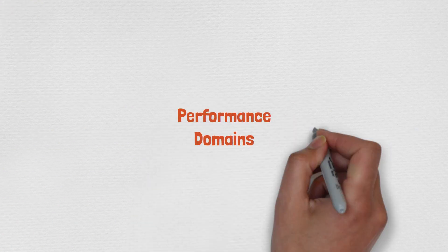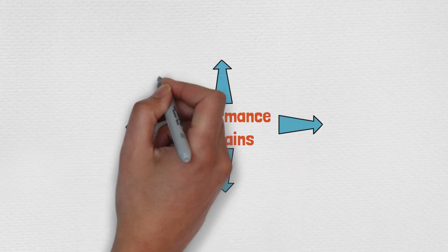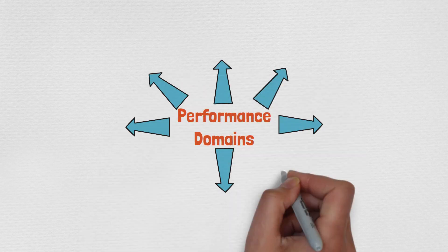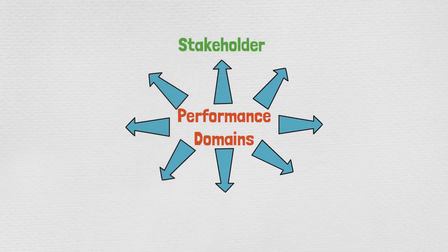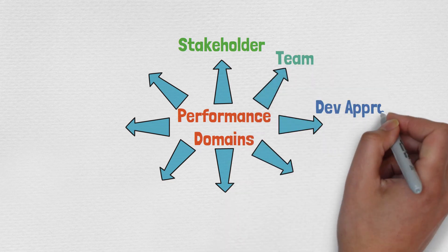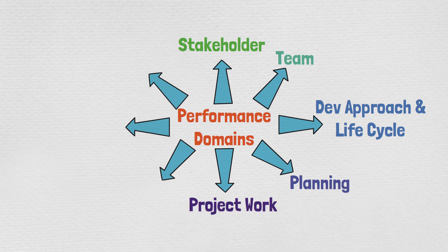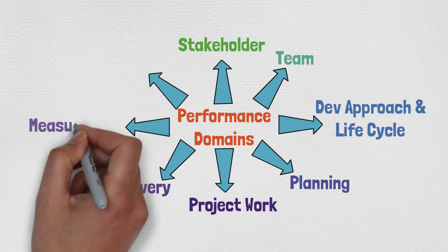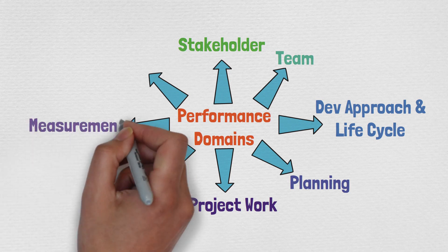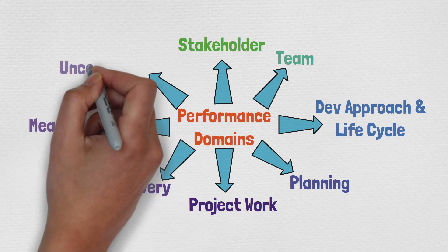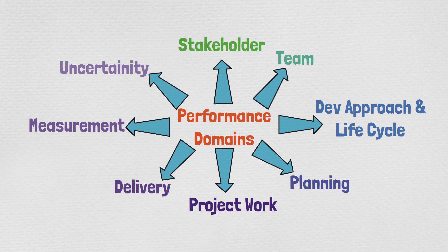The 8 performance domains are: Stakeholder, Team, Development Approach and Lifecycle, Planning, Project Work, Delivery, Measurement, and the final one — Uncertainty.